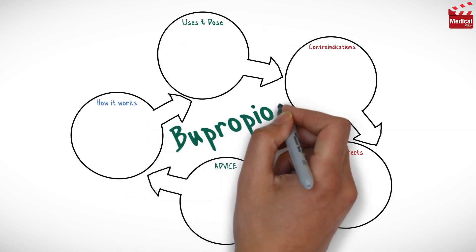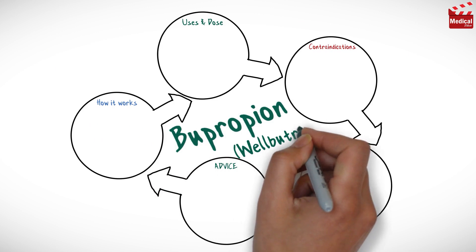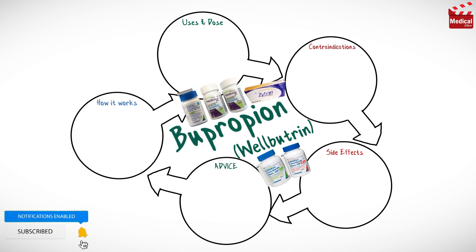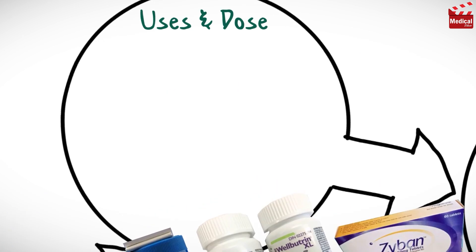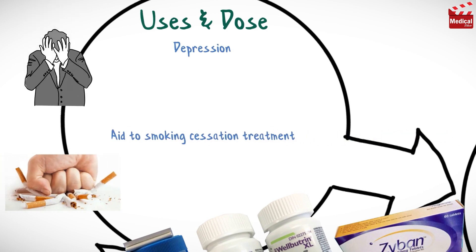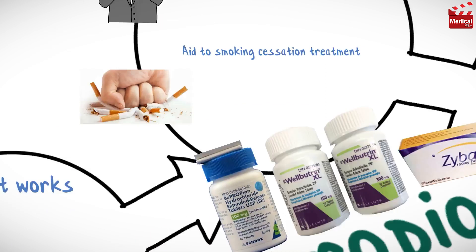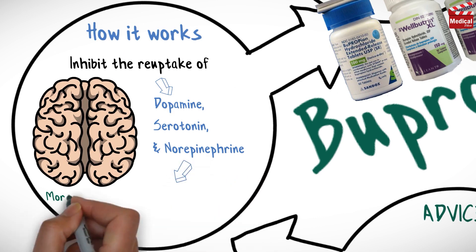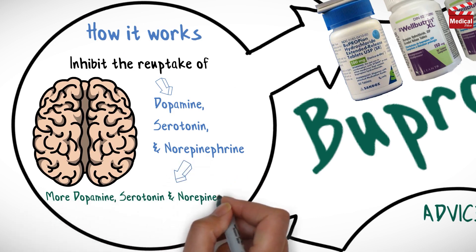In this video we'll briefly discuss what bupropion is, how it works, what it's used for, the dose and side effects, contraindications and precautions. Bupropion is used in the treatment of depression and as an aid to smoking cessation treatment. It works by inhibiting the reuptake of dopamine, serotonin, and norepinephrine, resulting in more of these neurotransmitters available to transmit messages to other nerves.